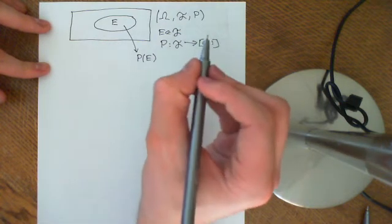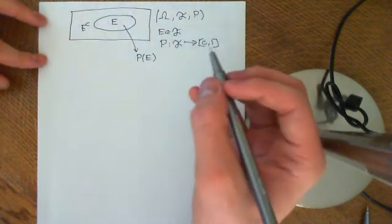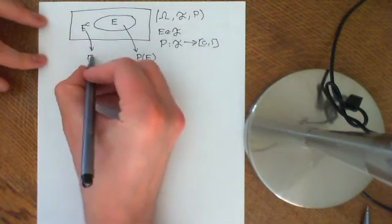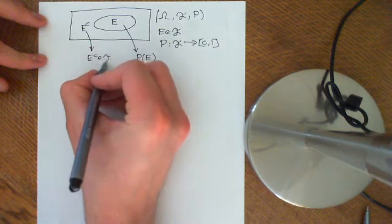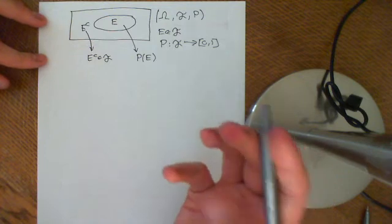So then we have this set e complement, which is everything that's not in e, and we know that e complement is also an element of the events, which makes sense. If e is an event, then e complement is just the event that e does not happen.